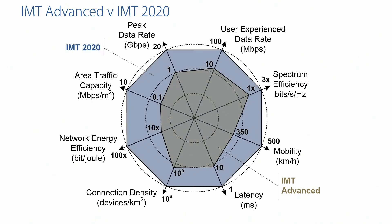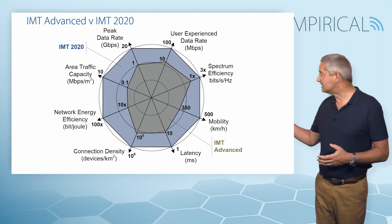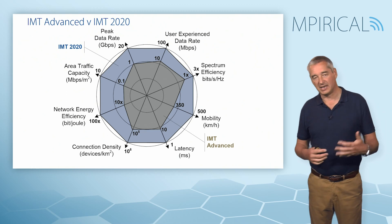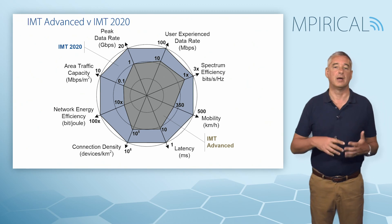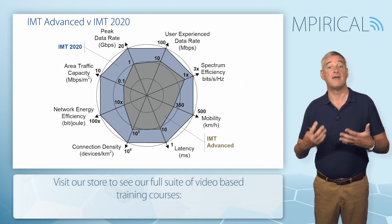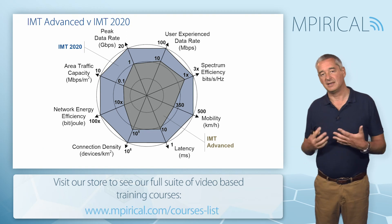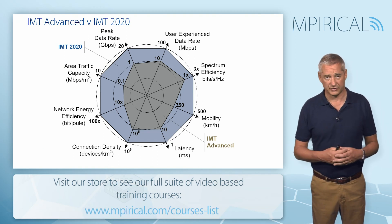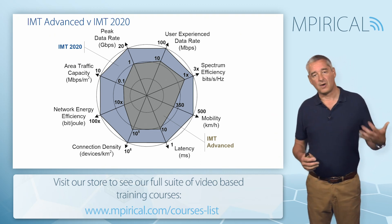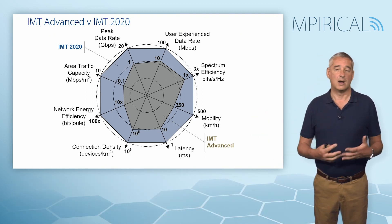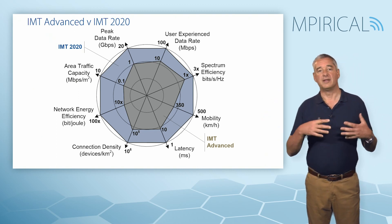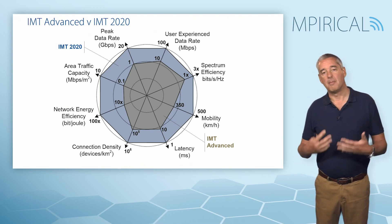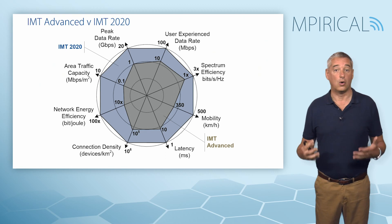Comparing this to 5G, not surprisingly, we've seen an improvement across all eight criteria. Peak data rates are now moving towards 20 gigabits per second. However, we should stress the user experience data rate is more likely going to be around 100 megabits per second — wherever we may be, we should expect this level of connectivity across our 5G networks. Likewise, mobility up to 500 kilometres per hour, and latency down to 1 millisecond. This gives a nice comparison of how our 4G IMT Advanced networks are migrating towards IMT 2020, or 5G.